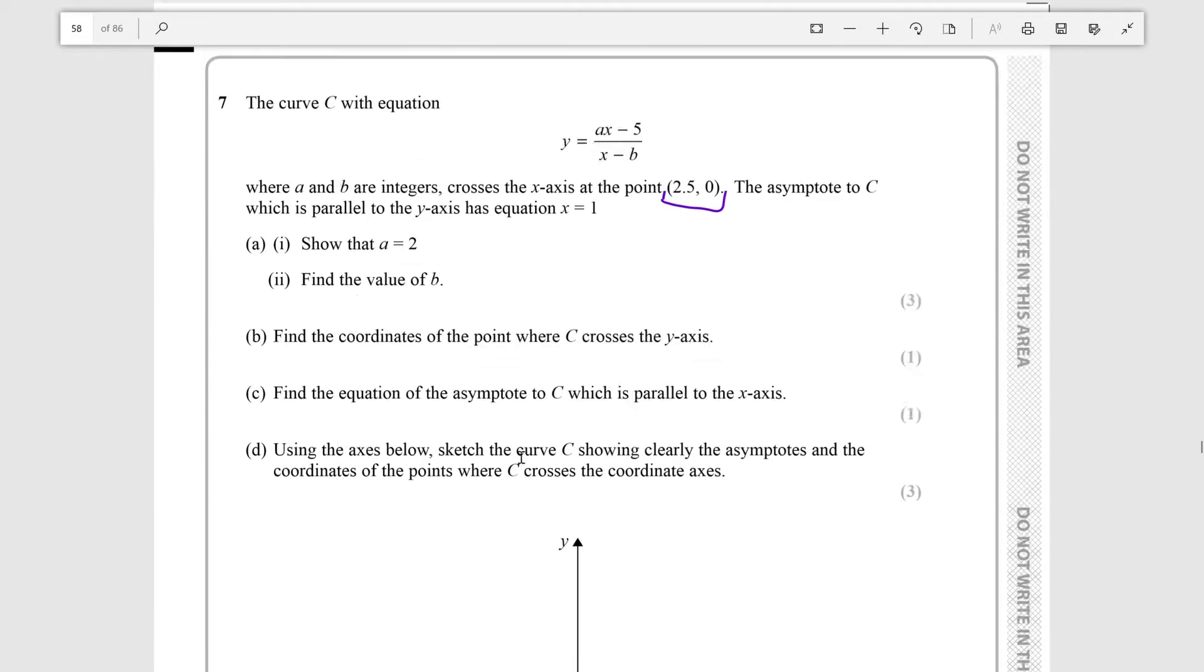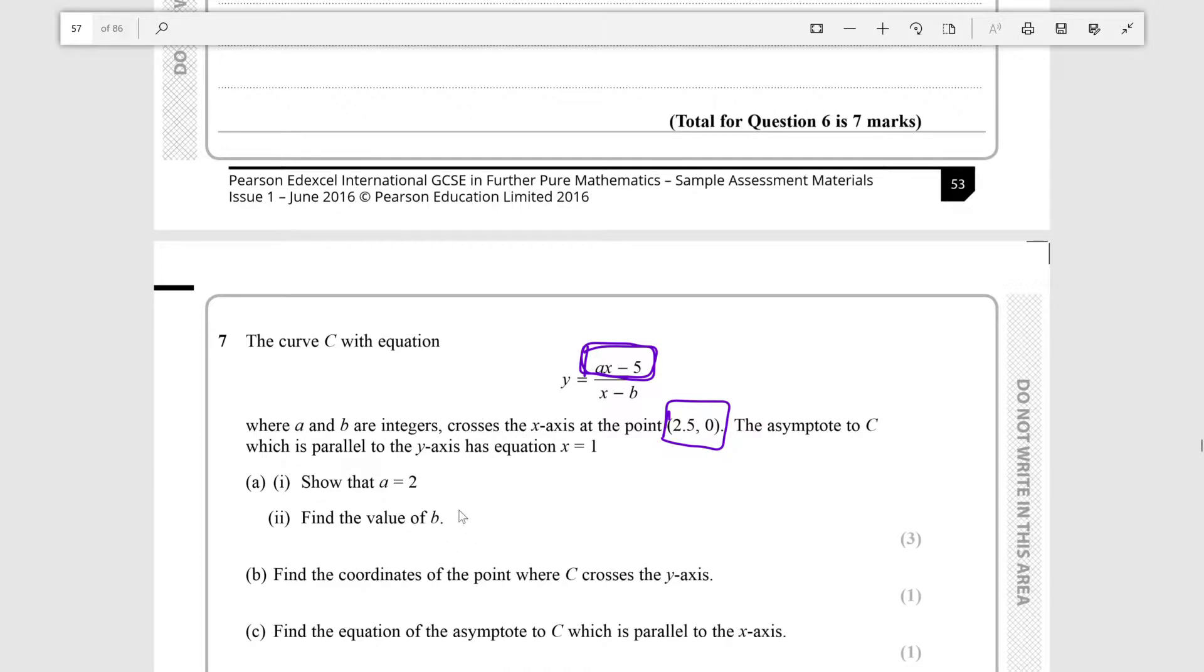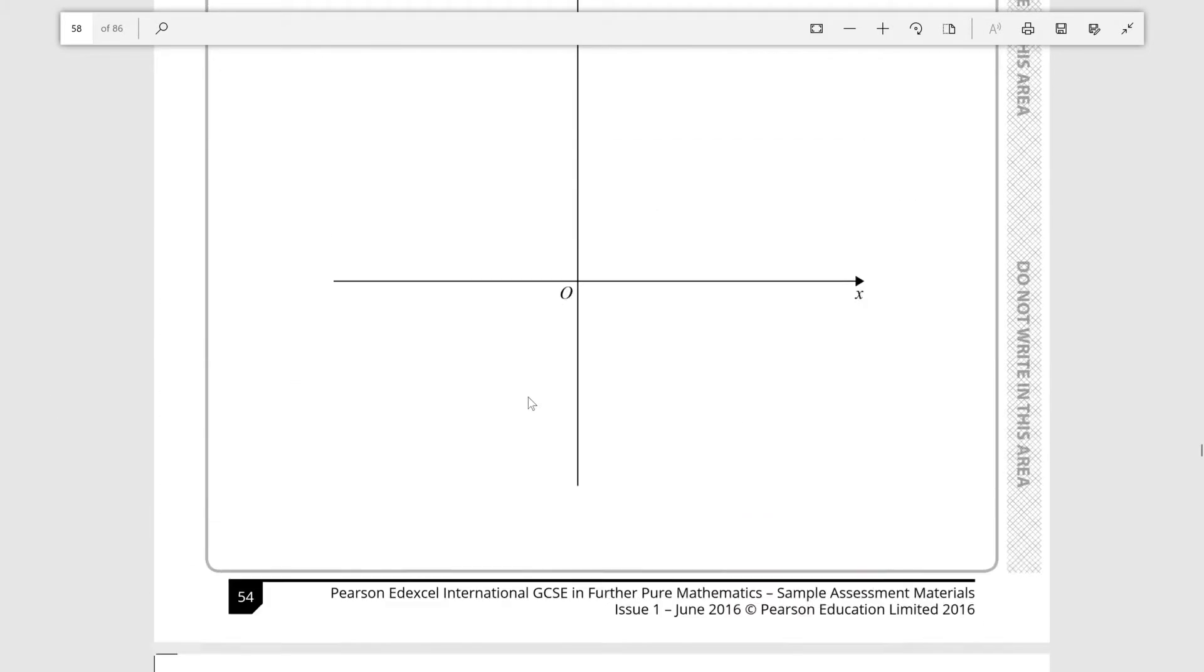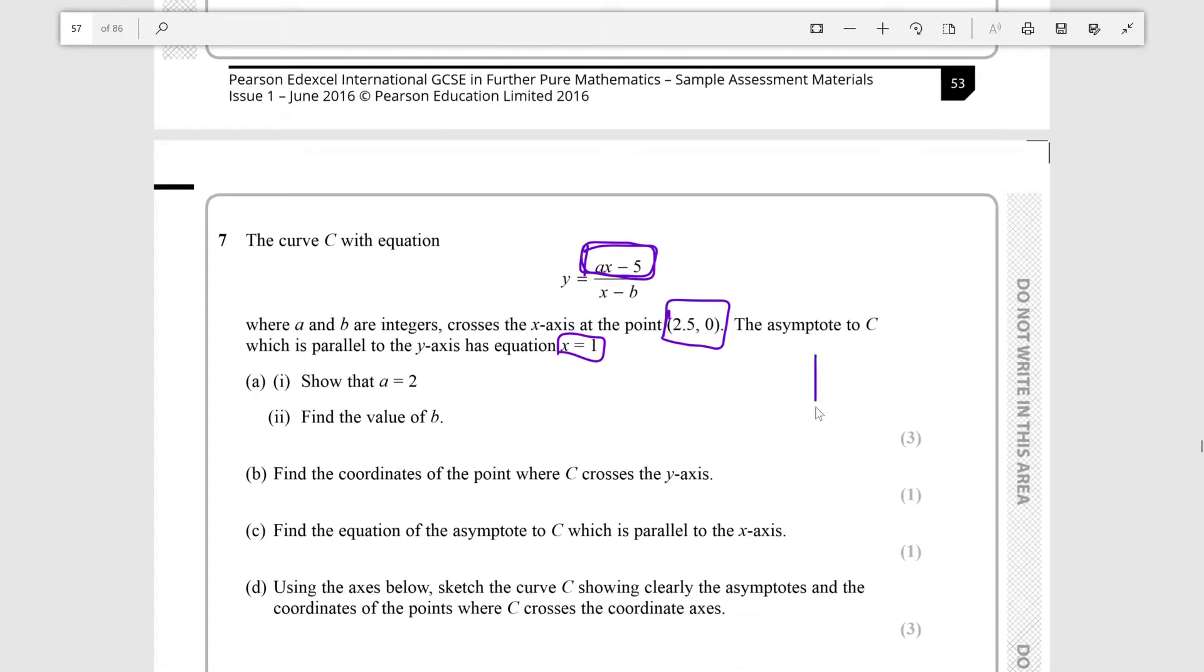And secondly, we need to find the value of b. We'll use this information that the asymptote to C which is parallel to the y-axis has equation x equals 1. When you have a vertical asymptote, a line like this where points will go to positive infinity and negative infinity, or the other way around, it's generally because the fraction is approaching a very small number or 0, in which case it would be undefined. When it approaches these really small numbers, you're dividing by a really small number, and so you get a really big number as your result for the function.